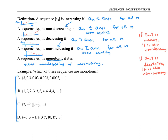The first two sequences are monotonic. The first one is monotonically non-increasing, since we never increase when we go from one term to the next. In fact, we could also say that it's monotonically decreasing, since we always go strictly down from one term to the next and we never have equality between terms.